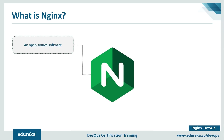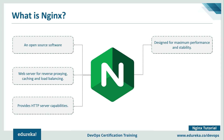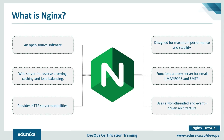Nginx is an open source software — a web server used for reverse proxying, caching, and load balancing. It also provides HTTP server capabilities and is mainly designed for maximum performance and stability. It also provides proxy server functions for email protocols such as IMAP, POP3, and SMTP, and uses a non-threaded, event-driven architecture. In simple terms, Nginx is a web server that ensures your page load time is reduced, which is critical for enterprise applications.